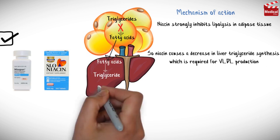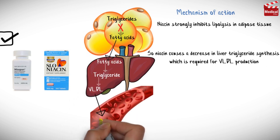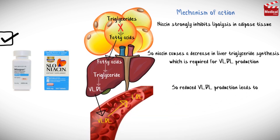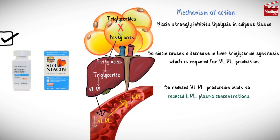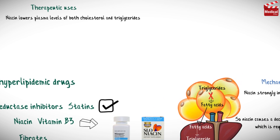Decreased liver triglyceride synthesis is required for VLDL production. As we know from the previous videos, LDL is derived from VLDL, so reduced VLDL production leads to reduced LDL plasma concentrations. Niacin also increases HDL plasma concentration. Niacin lowers plasma levels of both cholesterol and triglycerides, so it is useful in the treatment of familial hyperlipidemias.